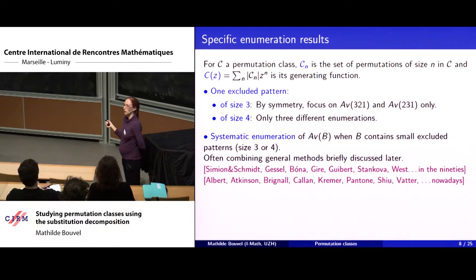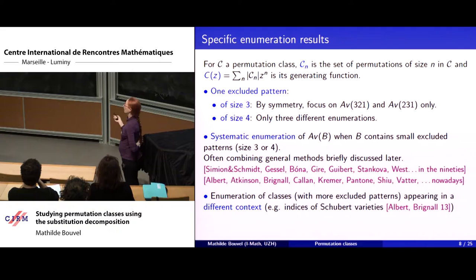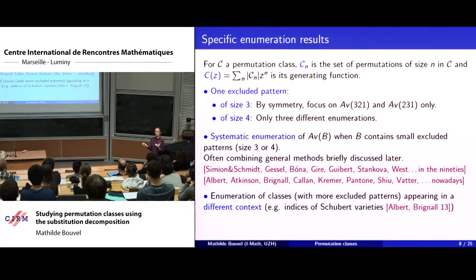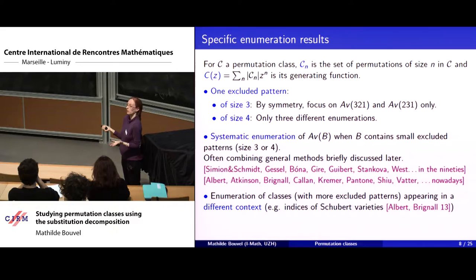Nowadays, a few new methods developed in the last decade have allowed solving the enumeration of other classes. I'll talk about one method in this talk and briefly mention a couple of others. This line of research has regained interest. You enumerate permutation classes not only for their own sake — sometimes a permutation class appears in another context. For example, there is a class with a basis of perhaps six or seven elements, of size up to six, that are indices of some family of Schubert varieties, and those enumeration techniques have been applied there.